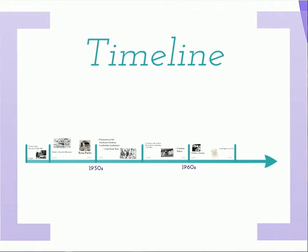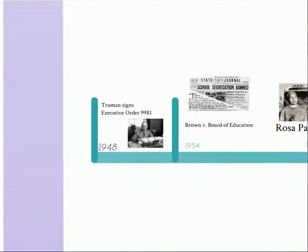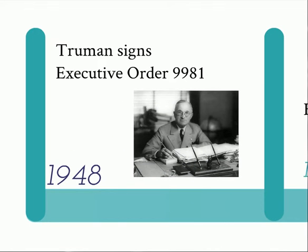Now let's look at a timeline of events during the civil rights movement. In 1948, President Truman signed Executive Order 9981, which states that there shall be equality of treatment and opportunity for all persons in the armed services without regard to race, color, religion, or national origin.